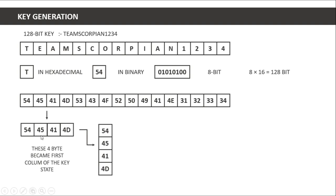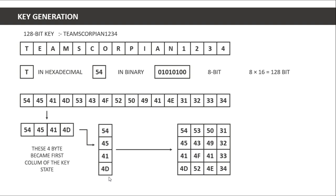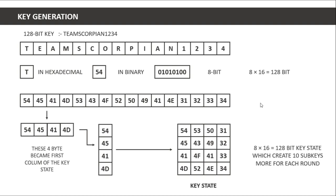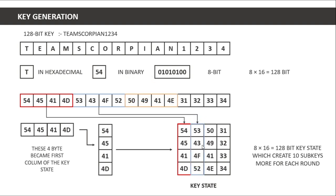We arrange the hex values — such as 54, 45, 41, and 4D — into columns forming a key state, also called key zero. This 4x4 structure of 8-bit values gives us 128 bits total. This key state creates sub-keys for each round. For 11 rounds we need 11 keys: this initial key state is used for the pre-round transformation, and the next four bytes become the second column of the key state, and so on.